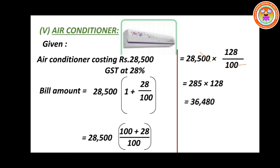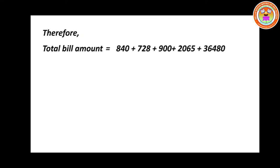The question asks for the total bill amount, so now add all amounts. Total bill amount equals medicine Rs.840 plus cosmetics Rs.728 plus cereals Rs.900 plus sunglasses Rs.2,065 plus air conditioner Rs.36,480. So your final bill amount is Rs.41,013.